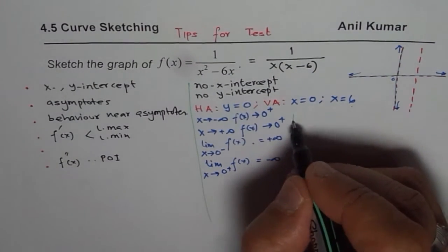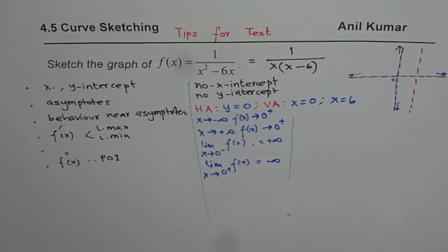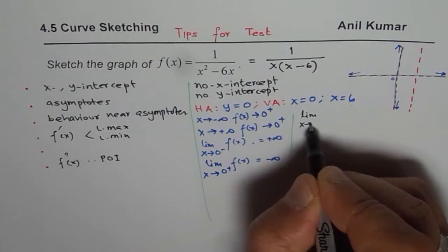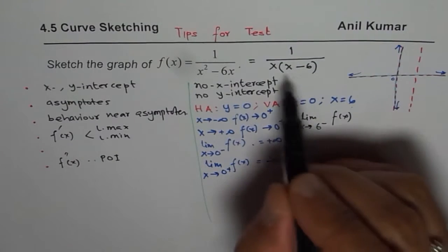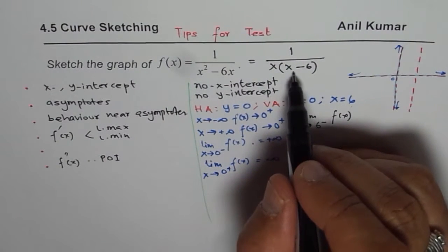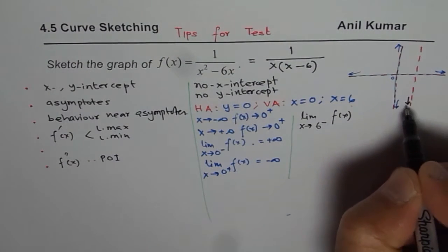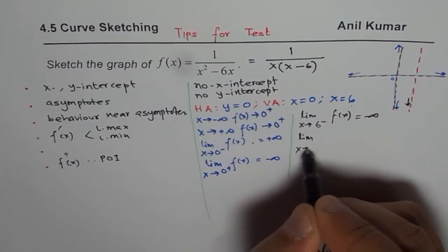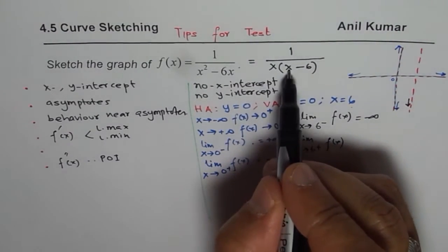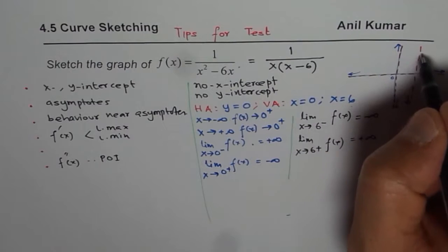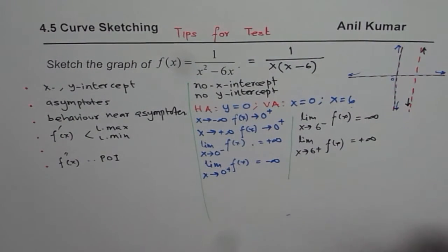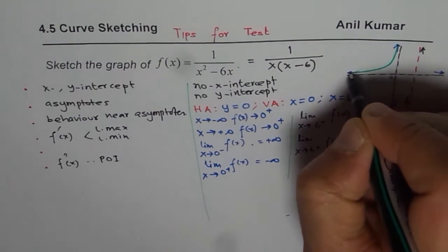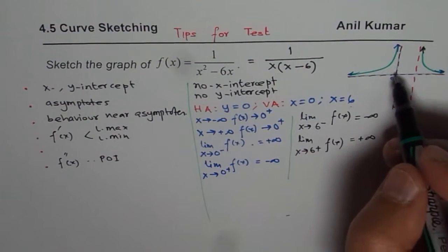Similarly, analyzing x = 6: the limit as x approaches 6 from the left — substituting 5.9 makes x(x-6) positive × negative = negative, so the function approaches negative infinity. The limit as x approaches 6 from the right — both factors are positive, so the function approaches positive infinity. Analyzing this behavior, you can sketch the graph on the left and right sides of both vertical asymptotes.